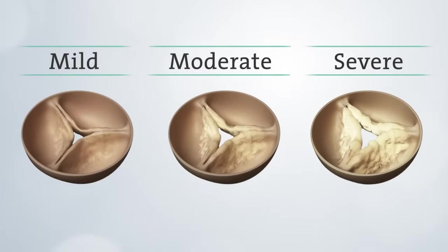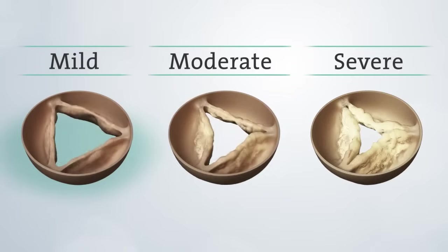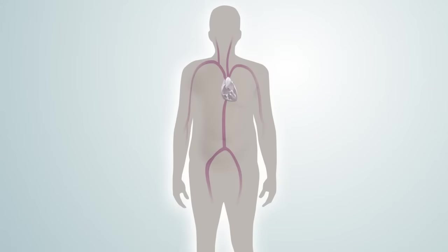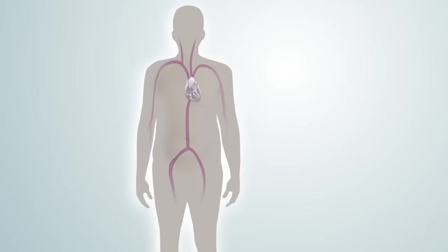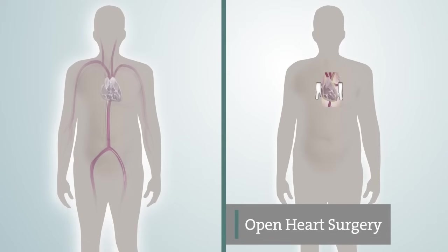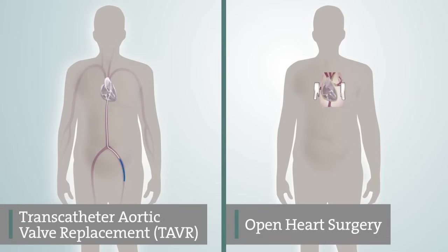Aortic stenosis is typically measured as mild, moderate, or severe. The only effective treatment for severe aortic stenosis is to have your aortic valve replaced. Today there are two options for replacement: open heart surgery or less invasive transcatheter aortic valve replacement, also known as TAVR.